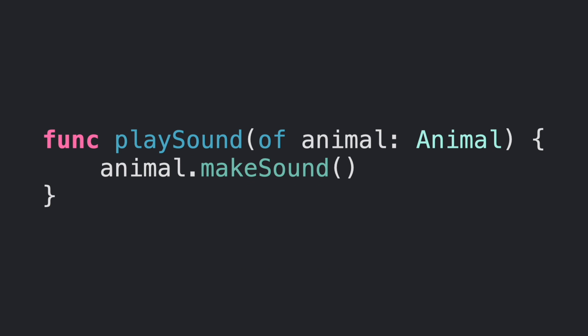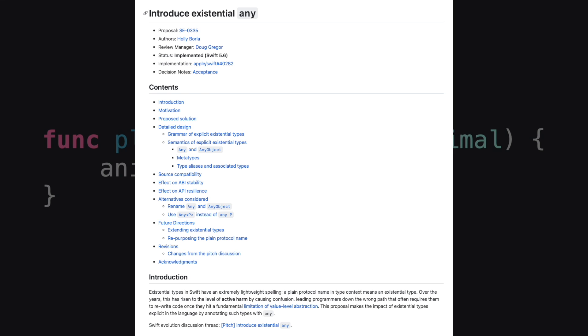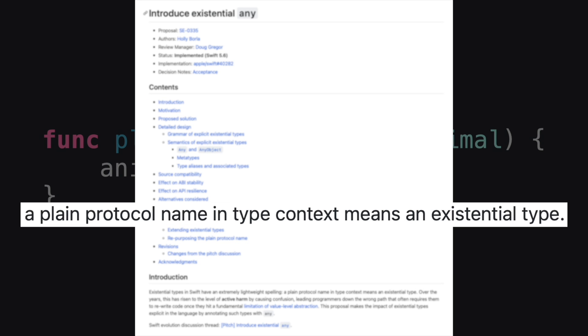In short, because this definition could be even more complex, let's say that every time you use a protocol as a type, that is an existential type. The existential type concept is important because the Swift documentation talks a lot about it, especially in the proposal of the 'any' keyword.